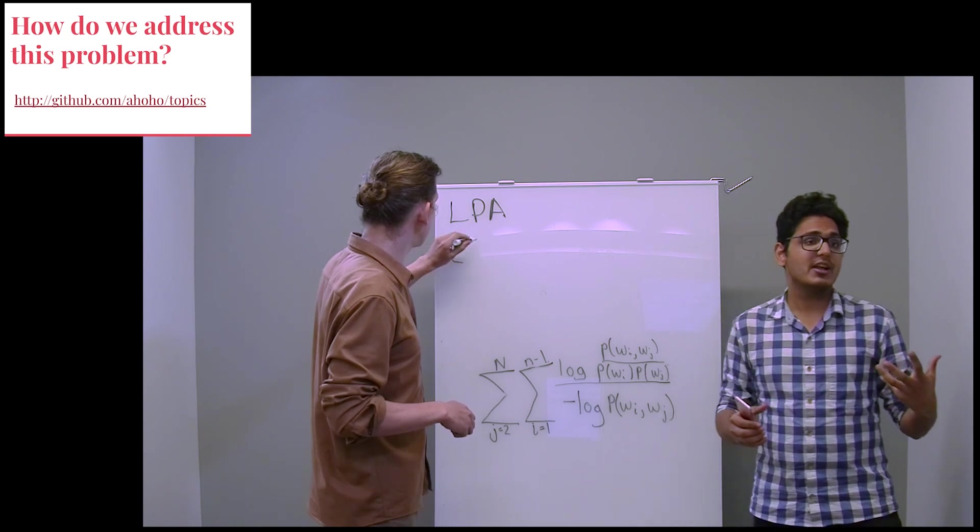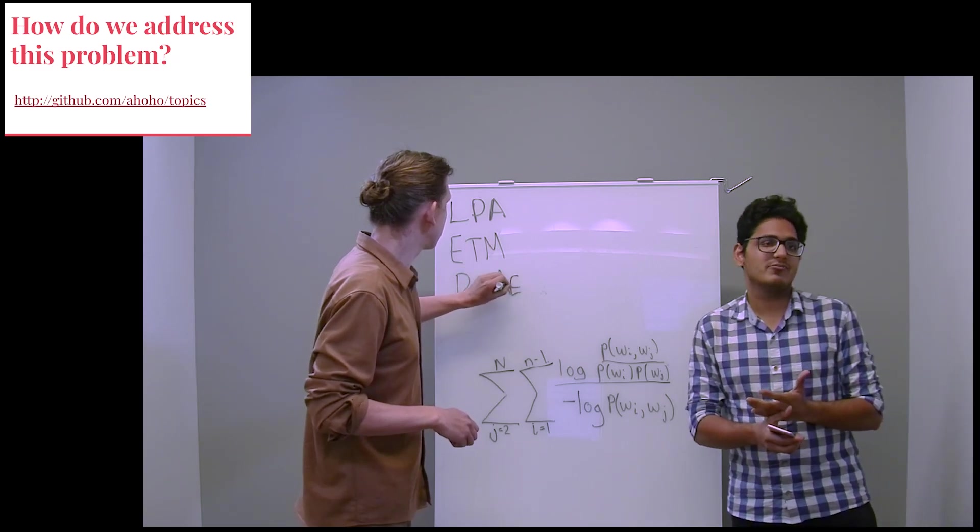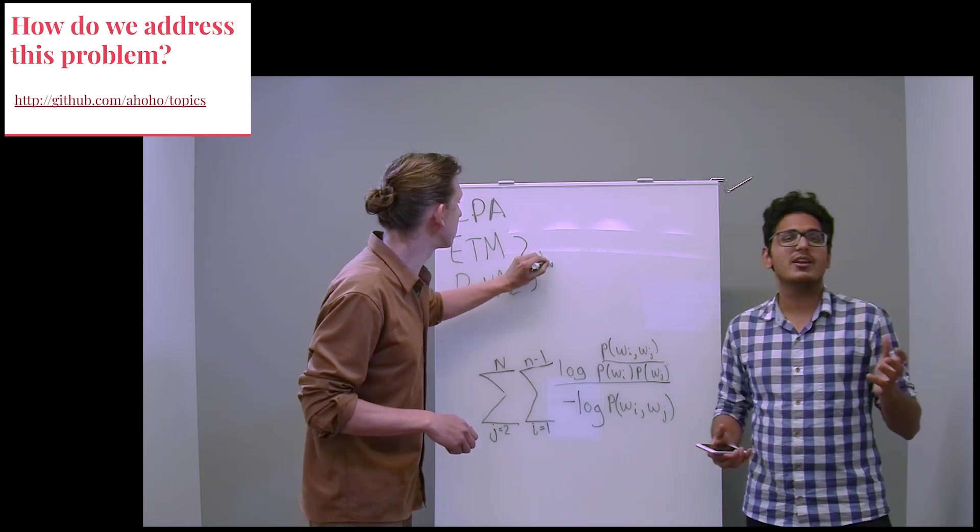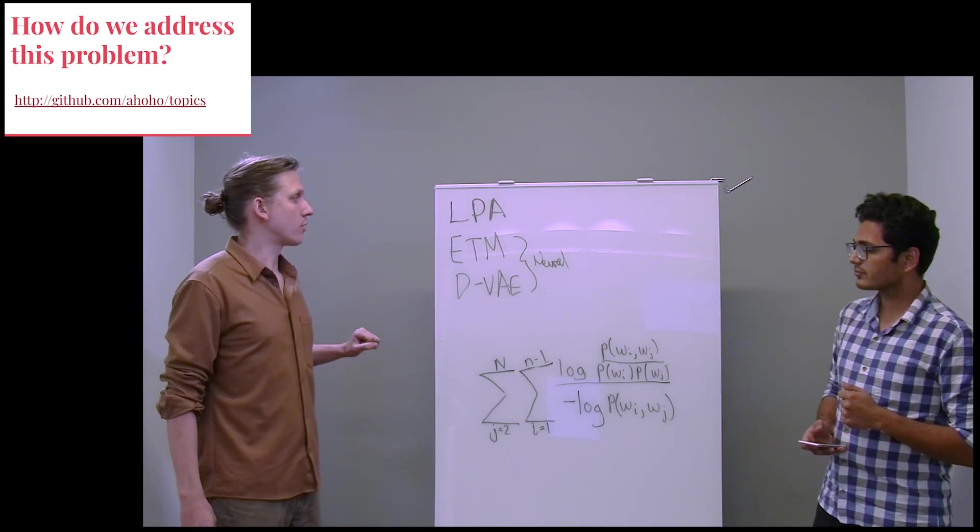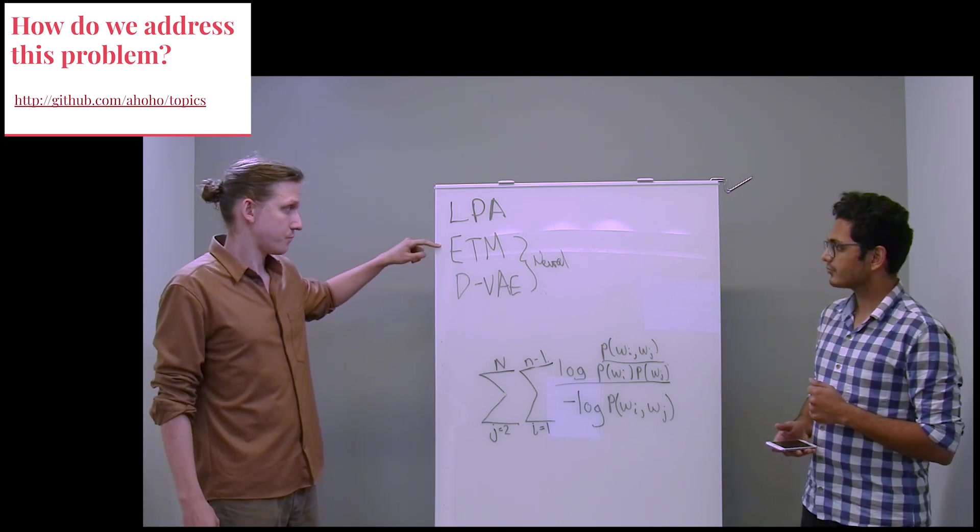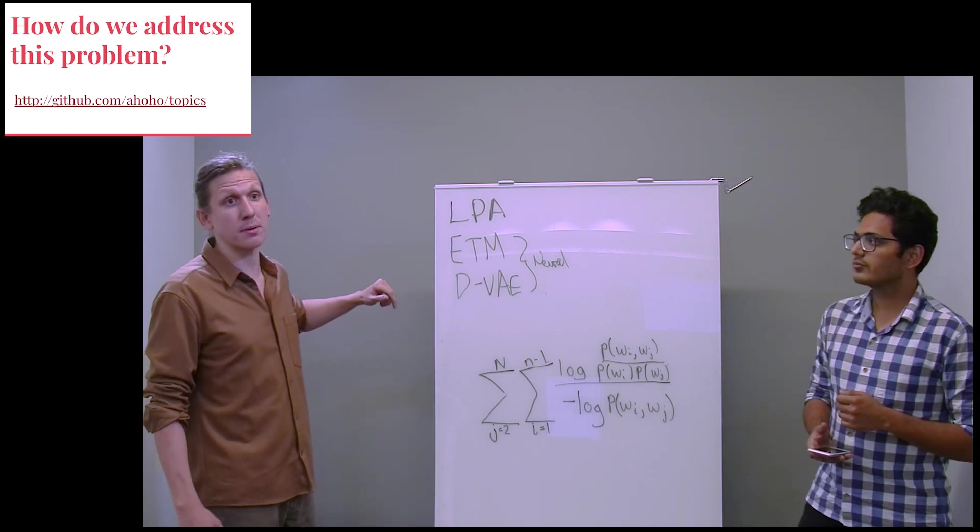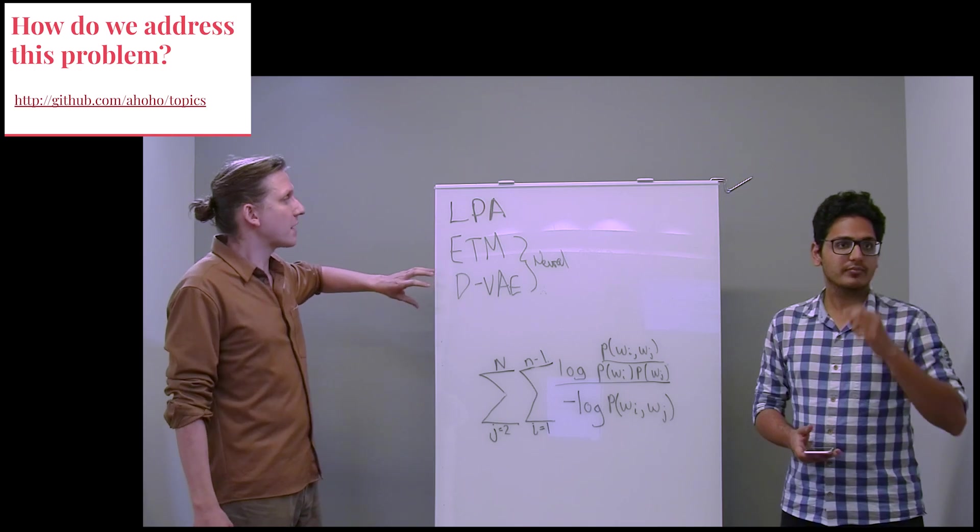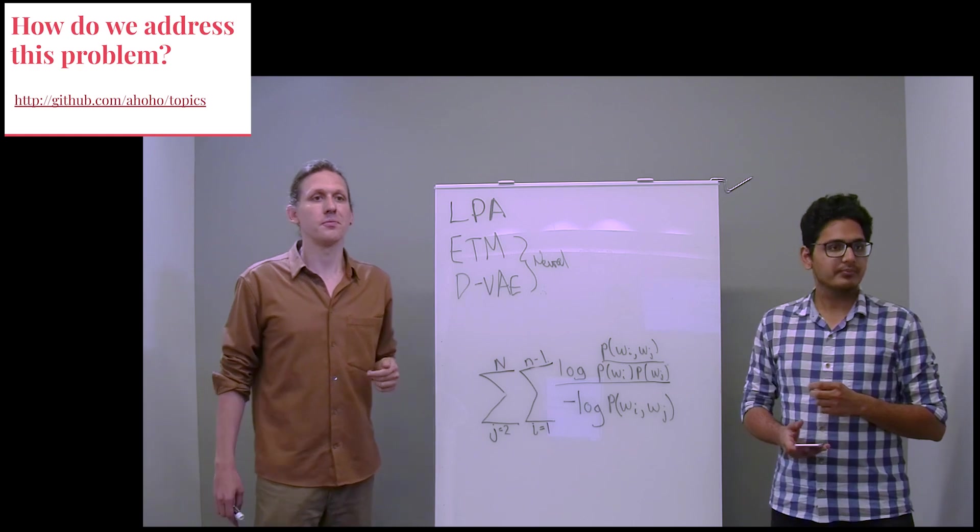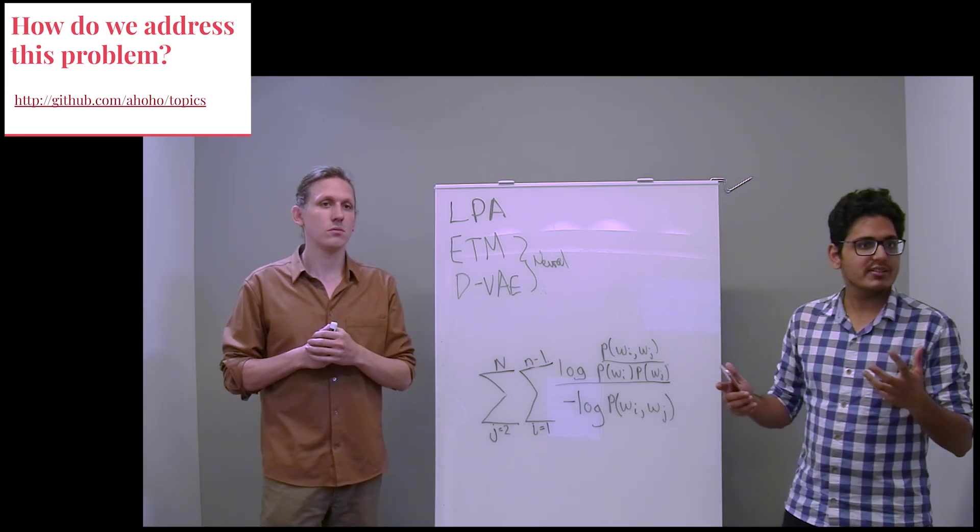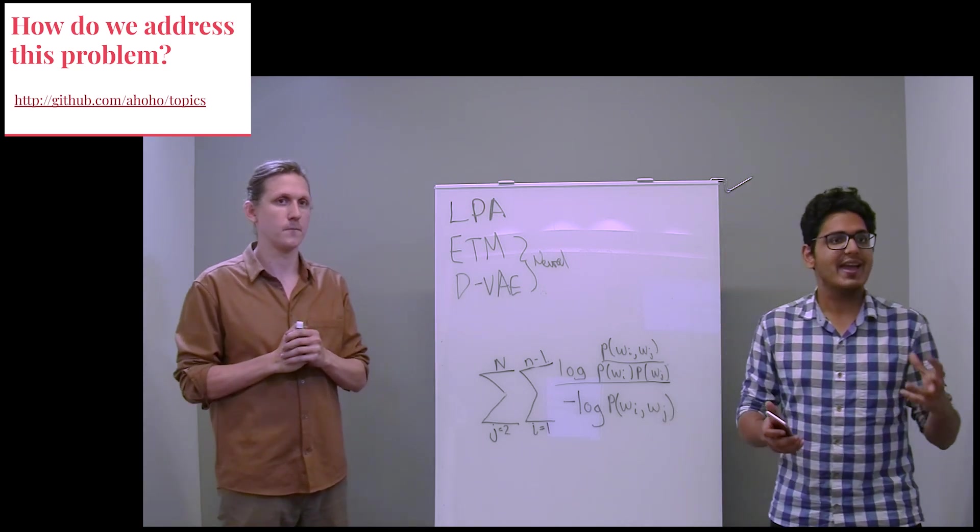The first model that we used was LDA with Gibbs sampling using MALLET. That is the go-to model. It runs quickly on a laptop. It's basically the first option that most practitioners turn to or should turn to. The other two models are neural. We have the embedded topic model, which uses word embeddings, and we have Dirichlet VAE, or a re-implementation of it anyway, which is effectively a neural version of LDA, an LDA estimated with a VAE. Anyway, to tune these models, we ran a computationally fair hyperparameter sweep optimizing for NPMI.